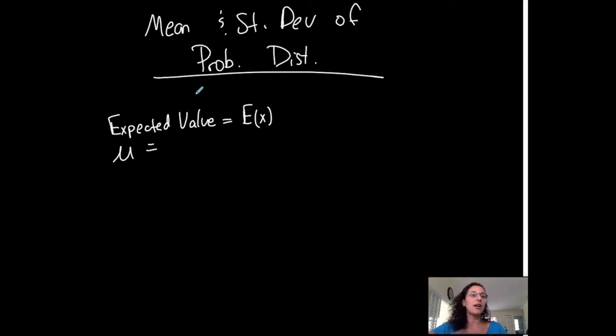The expected value is the same as the average of the probability distribution. You're going to take the summation of each random variable times its corresponding probability. Notice it's a population mean because a probability distribution represents all possible outcomes, which is the population.